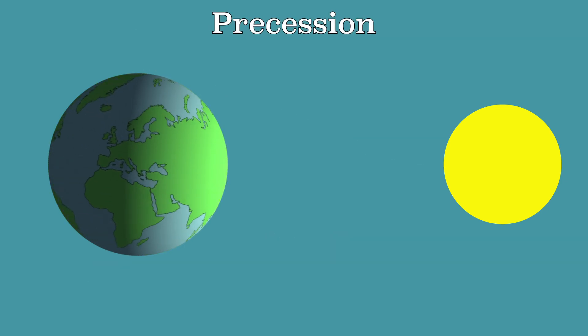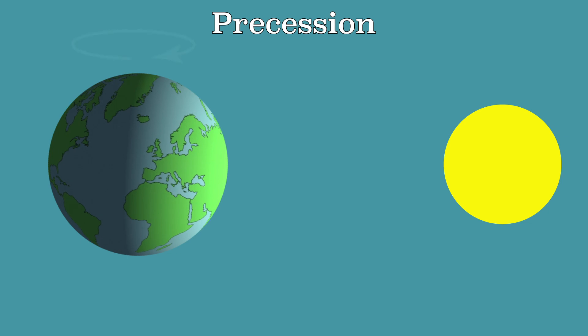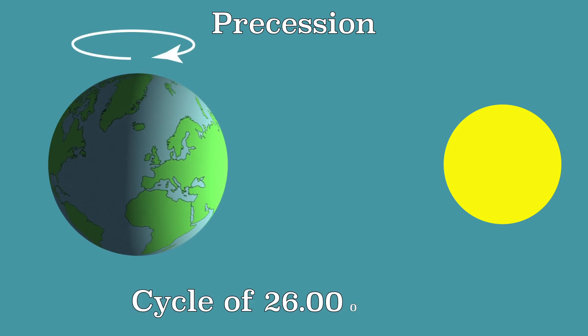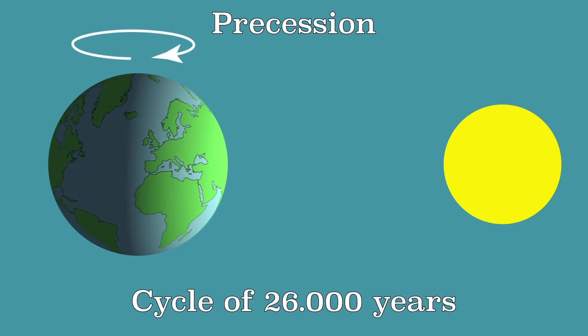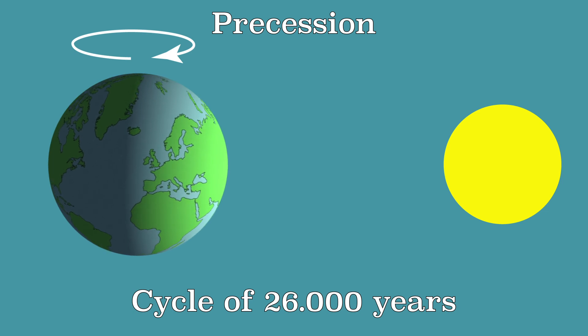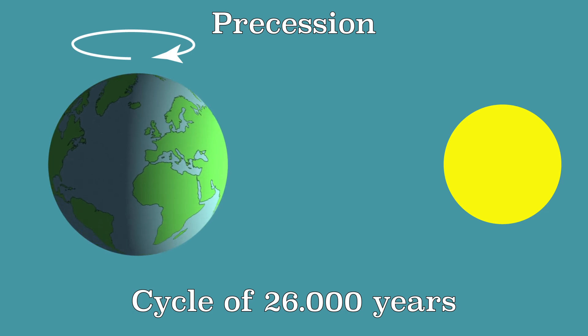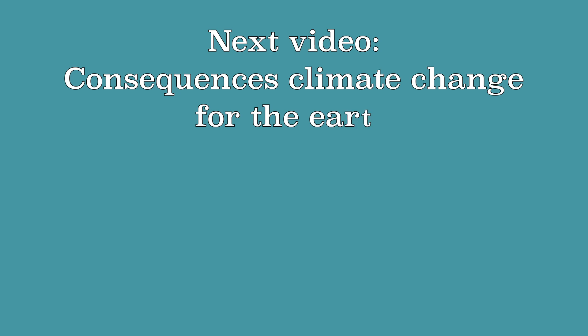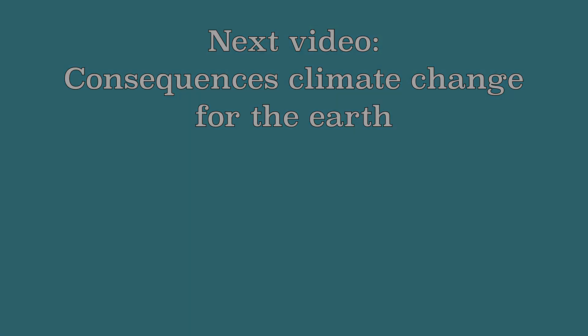The third variable is precession — a tilt movement around the Earth's axis that changes every 26,000 years. Here the first two effects are amplified or limited depending on the eccentricity and obliquity. Now that you have learned how natural fluctuations in the climate arise, we can investigate the consequences of climate change for the Earth.